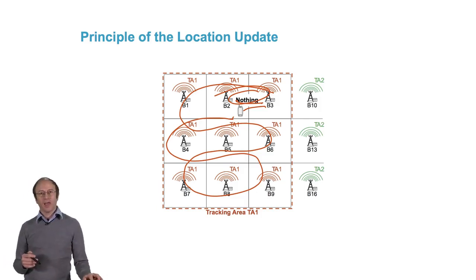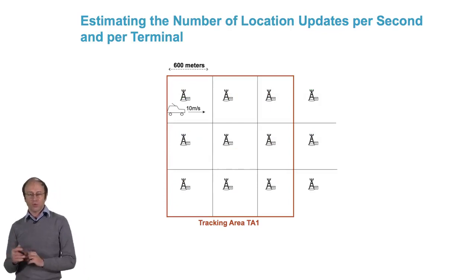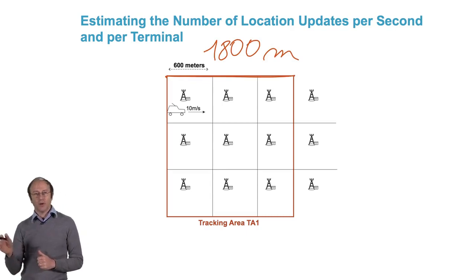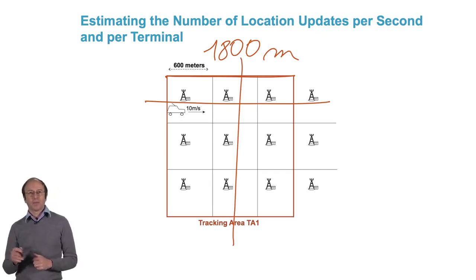Let's look at what that enables us to do. We no longer have areas that are 600 meters long. We now have zones that are 1,800 meters long. We take terminals that move on a straight line. Instead of updating every minute, we have an update every three minutes. Since in three minutes, we will have covered for a terminal at 10 meters per second, the 1,800 meters.